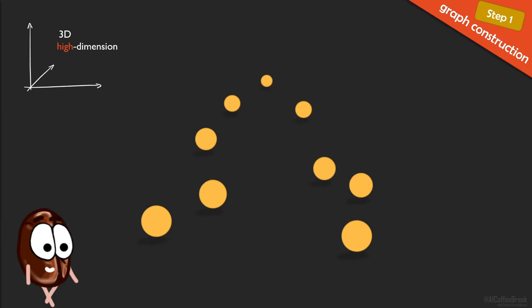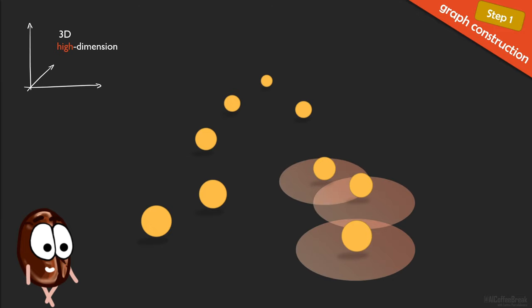For this, the UMAP algorithm extends a radius around each point and makes a connection between each point and its neighbors with intersecting radii. So far, the radii are equal. But remember, we want to approximate the shape of the data, so we want a connected graph containing all our data points.